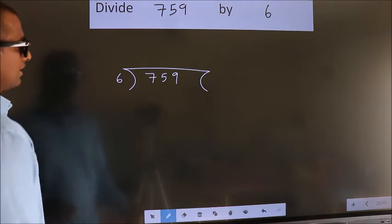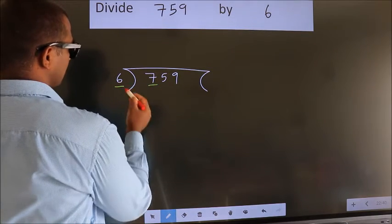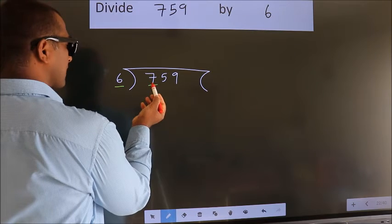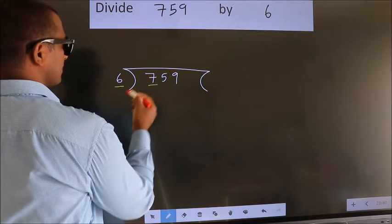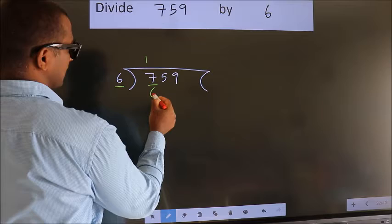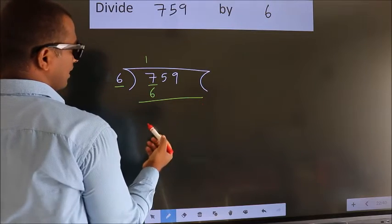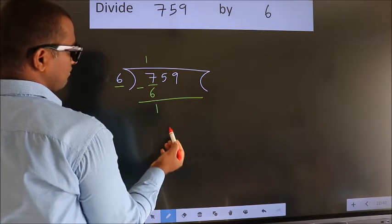Next, here we have 7, here 6. A number close to 7 in 6 table is 6 ones, 6. Now we should subtract. We get 1.